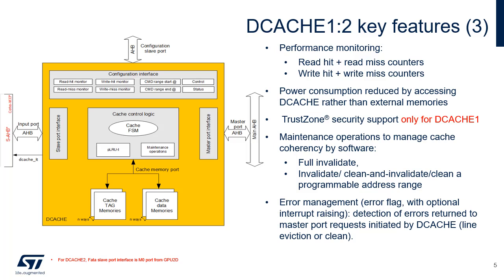Power consumption is reduced since most data accesses are performed from internal cache memory rather than from bigger external main memories. A dedicated secure bit in the tag-RAM of each cache line prevents non-secure requests from hitting secure DCache1 entries. As the GPU2D traffic is non-secure, DCache2 does not support TrustZone.